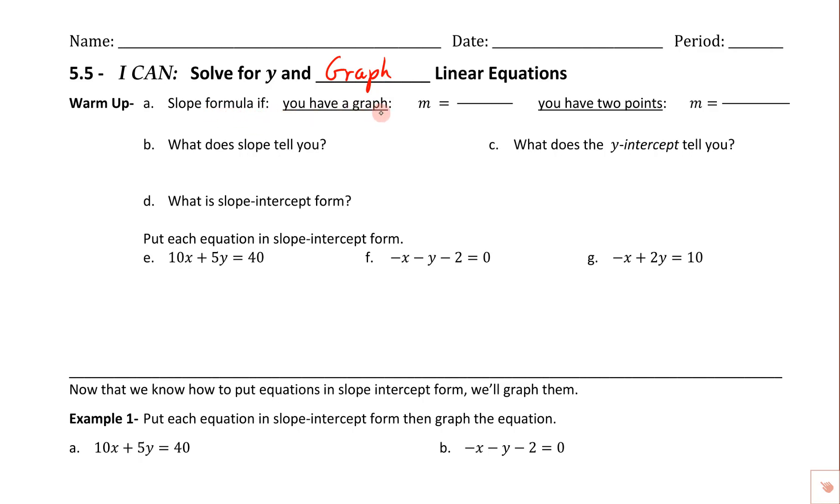The slope formula if you have a graph: remember if you've got a graph, we're thinking of the slope in terms of the rise over the run. The rise is whether you go up or down, that's why it has to do with the y's, and the run is whether you go right or left, that's why it has to deal with the x's. If you've got two points, then the slope is y2 minus y1 over x2 minus x1. Remember, the minus is part of the formula, it doesn't have anything to do with the signs of the numbers that we put in there for the coordinates.